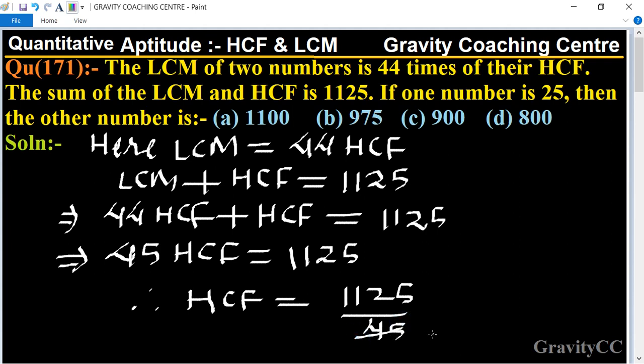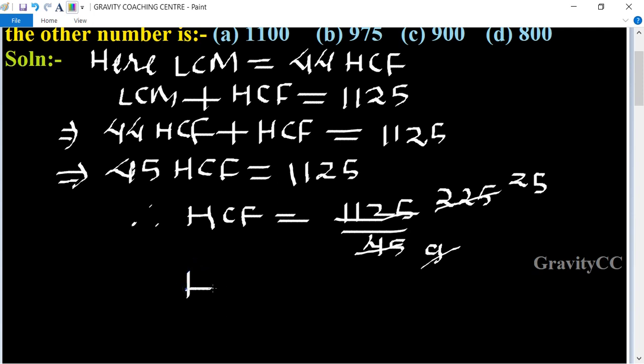Just cancel by table of 5. So we get 225 divided by 9, which gives us 25.